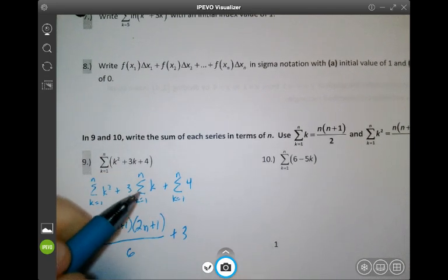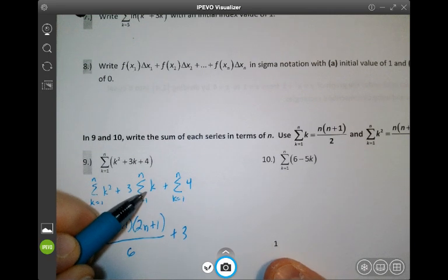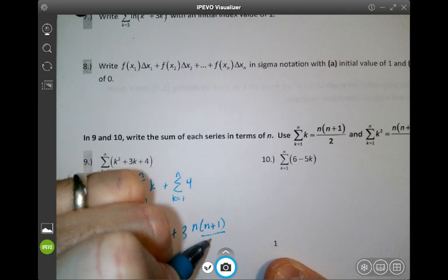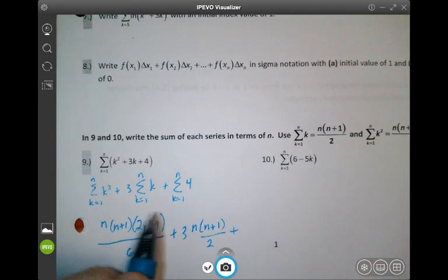Then plus 3 times the sum from k equals 1 to n of just k which is n times n plus 1 over 2. And then lastly plus,